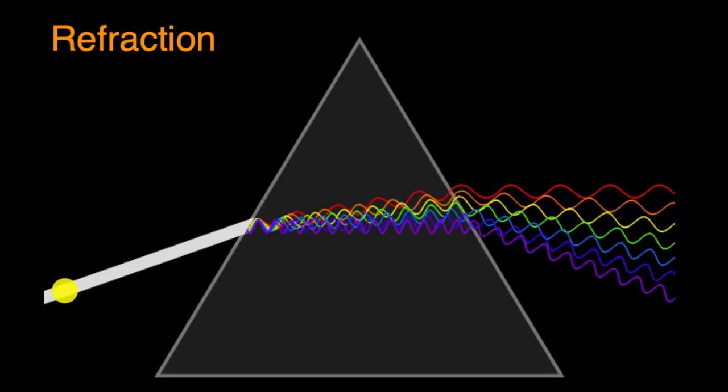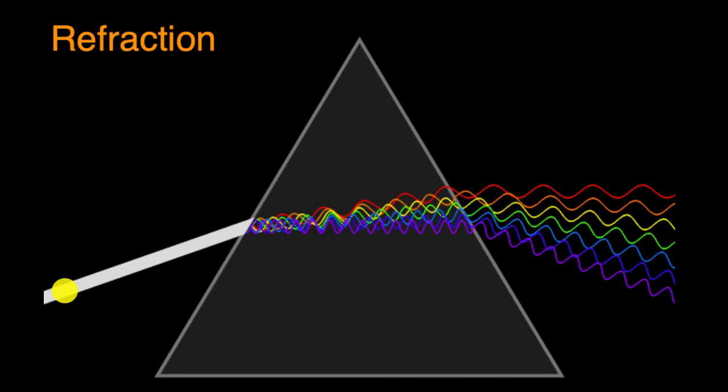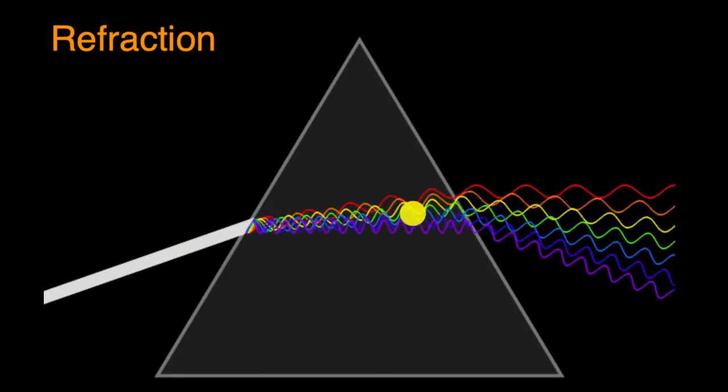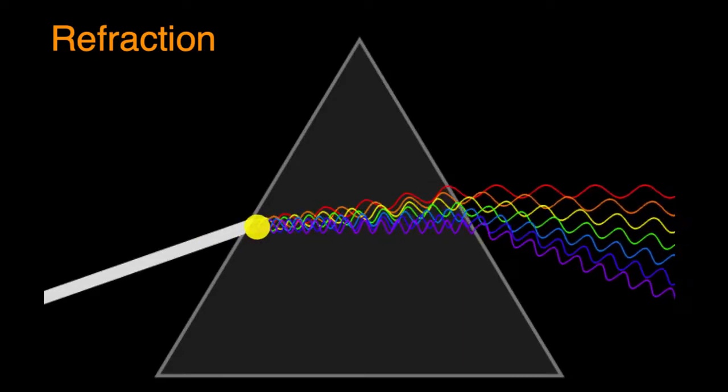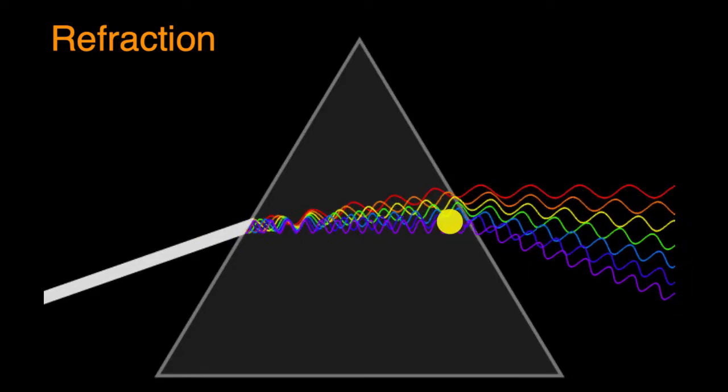And then that essentially spreads out all of the wavelengths. When we have white light, it has all of the visible wavelengths in it. But when it hits a prism like this, if you imagine a triangular piece of glass or crystal, and it hits it at an angle, then the different wavelengths spread out.